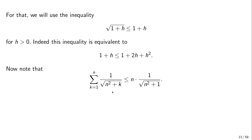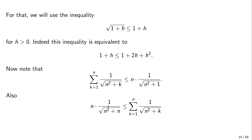Looking at the sum, the maximal element occurs when the denominator is smallest, i.e., when k equals 1, giving 1 over √(n² + 1). So the sum is smaller than n times that maximal element. Similarly, the sum is bigger than n times the minimal element, which occurs when the denominator is largest — when k equals n — giving the smallest term. Therefore we have a lower and upper bound on the sum.